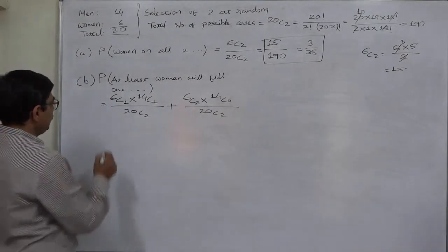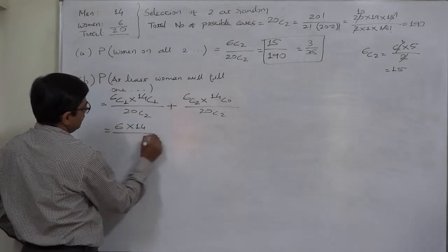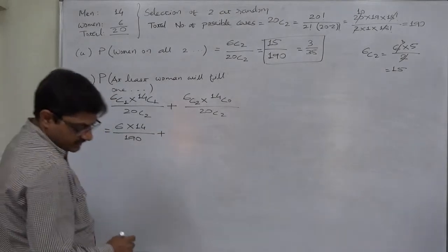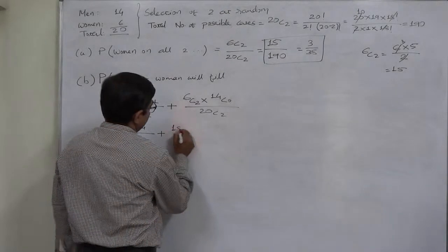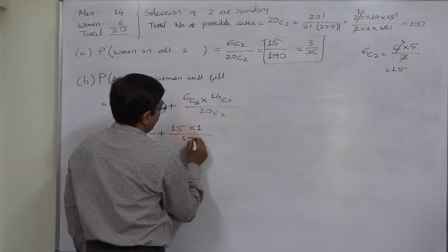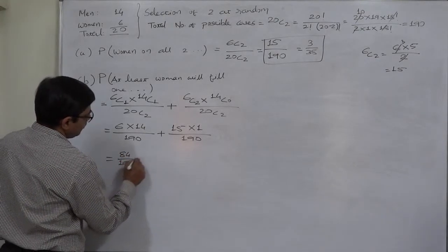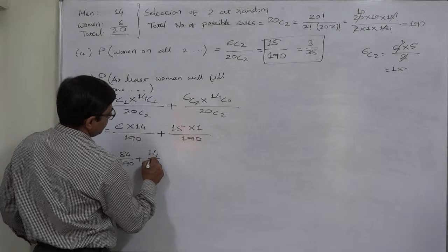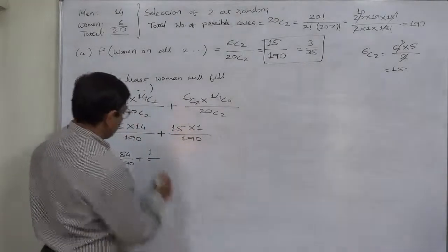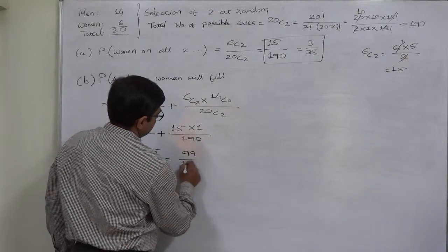Yes, the value of 6C1 is 6 and 14C1 is 14 upon 190, plus 6C2 is 15 and 14C0 is 1 upon 190. 190 becomes LCM. So 84 upon 190 plus 15 upon 190. That means 99 upon 190.